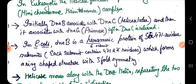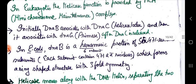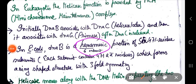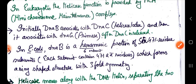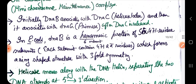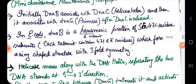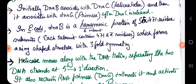DnaB is a hexameric protein — it has six subunits, and each subunit has 471 amino acid residues. DnaB interacts with the DNA at the replication fork, forming a ring-shaped structure with a three-fold symmetry.